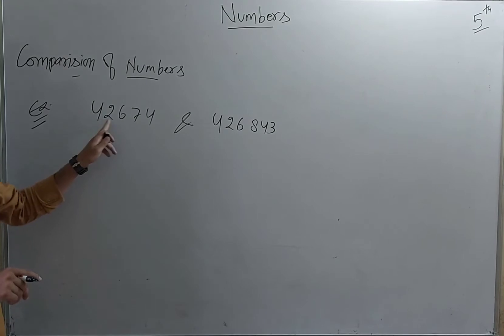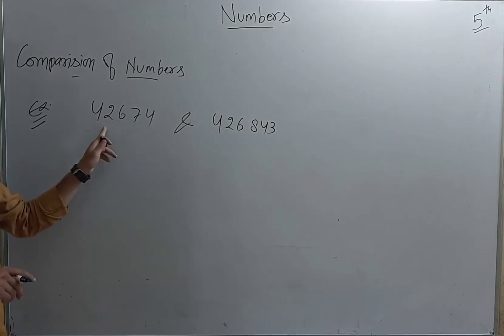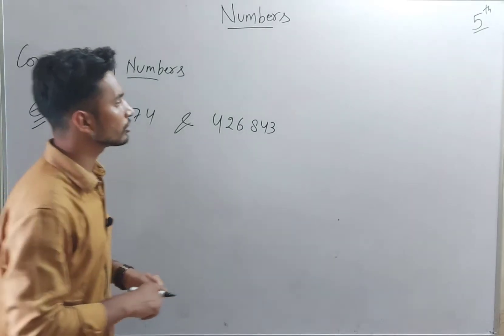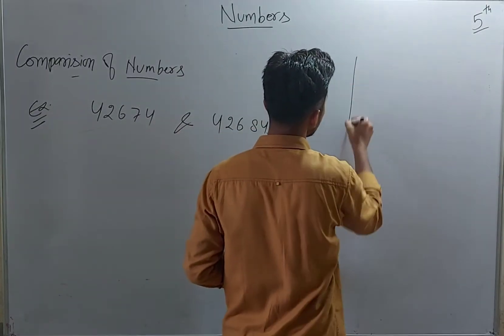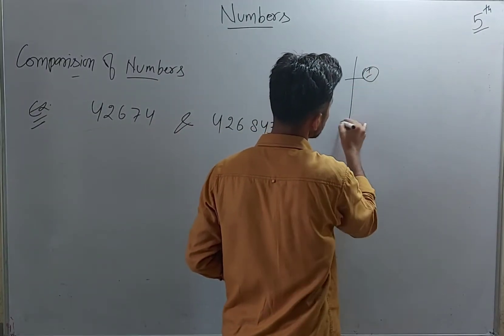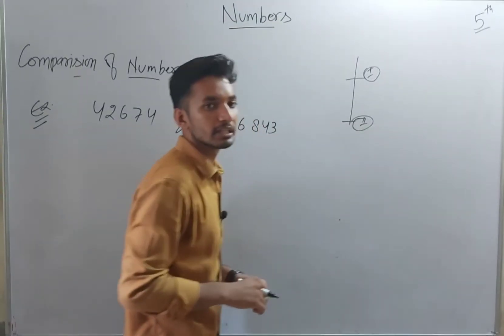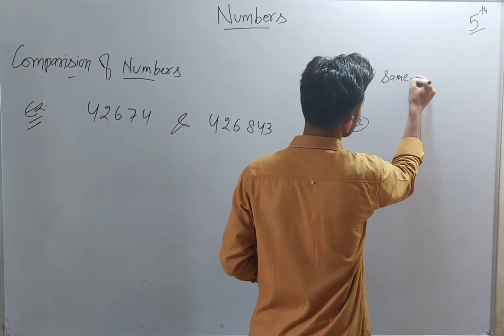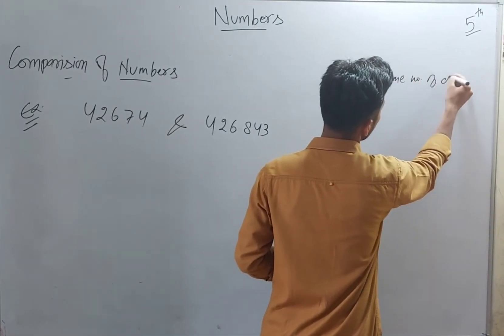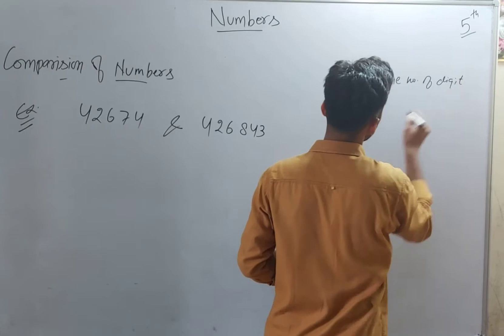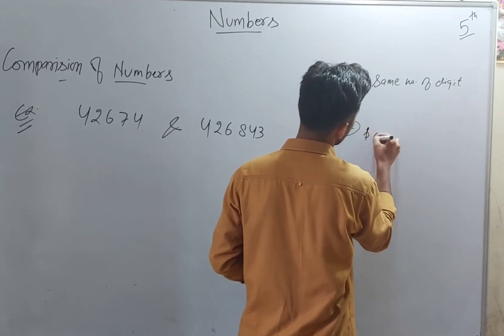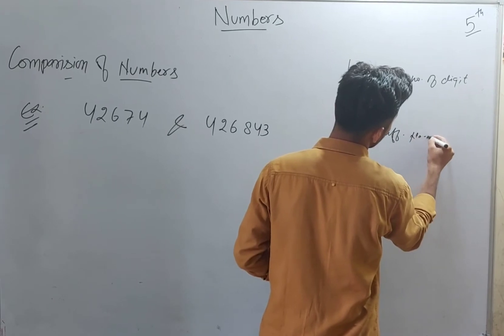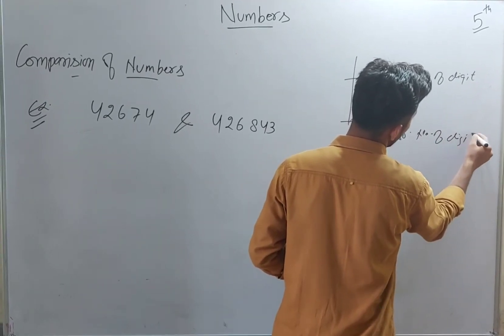So the first example is 426 and 74 compared with 426 and 843. As we all know, for the comparison we have two cases. The first case is when the numbers contain the same number of digits. The second case is when numbers contain a different number of digits.